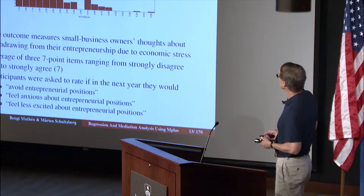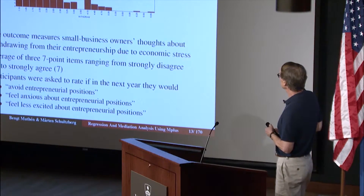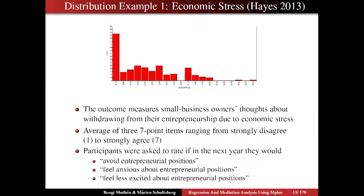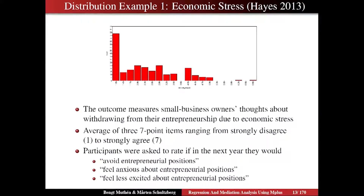Two examples: the first is a distribution with a high floor effect — economic stress. The book draws on examples from Hayes' 2013 mediation book. Here we have small business owners thinking about withdrawing from entrepreneurship. Economic stress is the average of three seven-point items asking whether in the next year they would avoid entrepreneurial positions, feel anxious about them, or feel less excited about them. Which of the three models would you choose for these kinds of data?